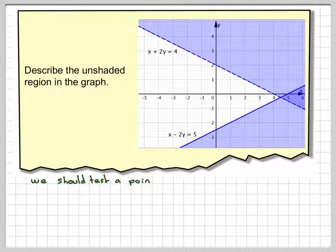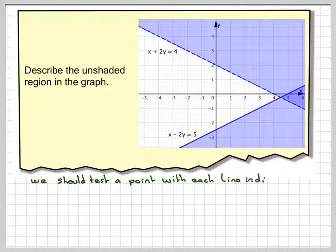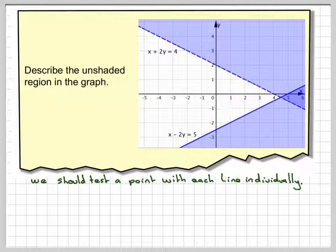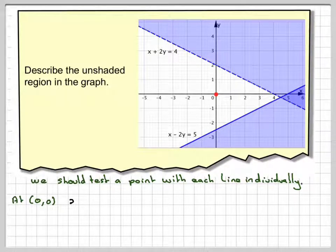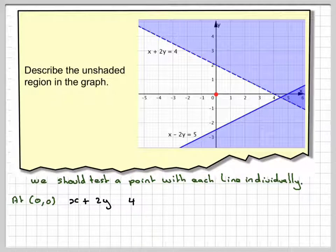So we should test a point with each line individually. We're going to test this line here first which is x plus 2y is equal to 4 and because 0,0 is in the shaded region we would test the point 0,0 against x plus 2y and 4.